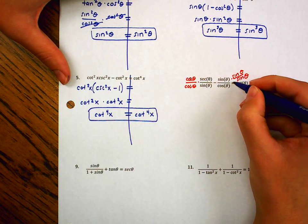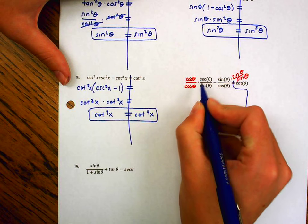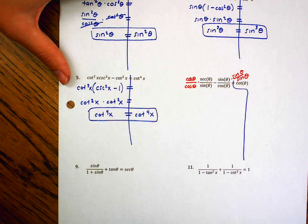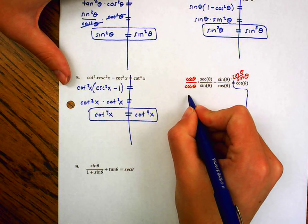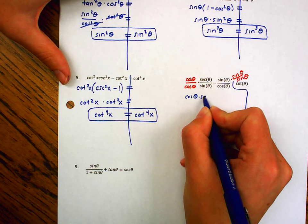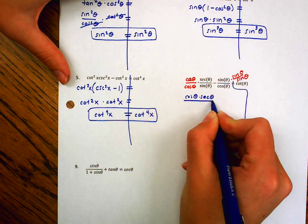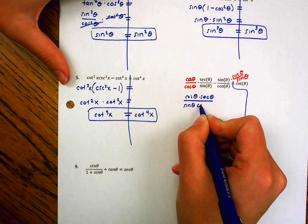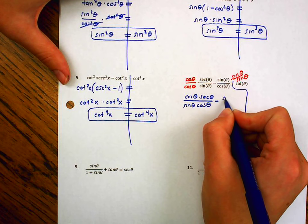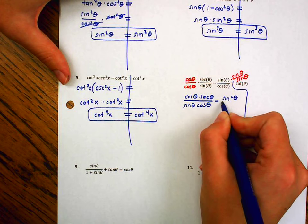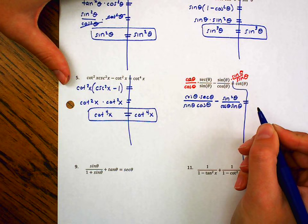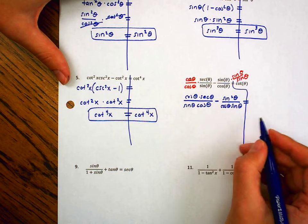And this one I need to multiply by sine of theta over sine of theta. This is definitely the easier side. I think I might need a little more room. Okay, so if I multiply that across, I'm going to get a cosine secant over cosine, over sine cosine. Minus. It's going to give me a sine squared over cosine theta sine theta.